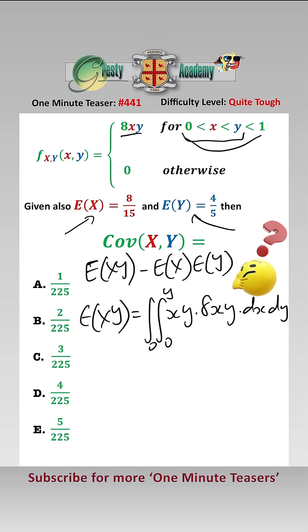Doing this double integral taking the 8 out that equals 8 the integral between 1 and 0 of X cubed Y squared over 3 between 0 and Y dy and that equals 8 over 3